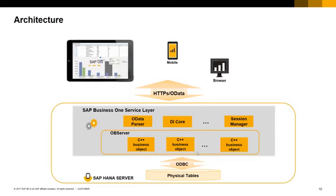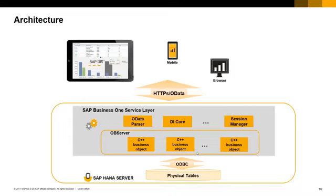Let's take a quick look at the architecture. Service Layer is running on Linux. It encapsulates SAP Business One business logic inside the OBE server DLL in the form of C++ business objects and services. The business logic is of course the same as the SAP Business One client and the API business logic. Communication between Service Layer and the SAP HANA physical tables is done via SAP HANA ODBC drivers. On top of the OBE server, the OData parser, the DI core, the Session Manager and other services allow applications to access Service Layer business objects and services using HTTPS and OData.